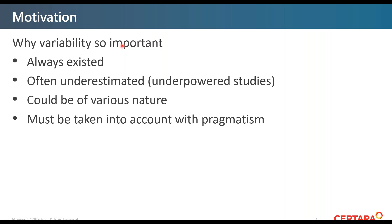Very often this part of variability is underestimated, including in the IVIVC, because for example for the predictability they ask you to see if you have plus or minus 10% difference versus the reference value, but they don't discuss about the variability. Variability could be of different nature and you have to know if you can control it or not. You always have to take it into account with pragmatism — for example when you have two studies and you want to pool the data, you have to be careful how you can set up the variability between subjects and between the two studies.